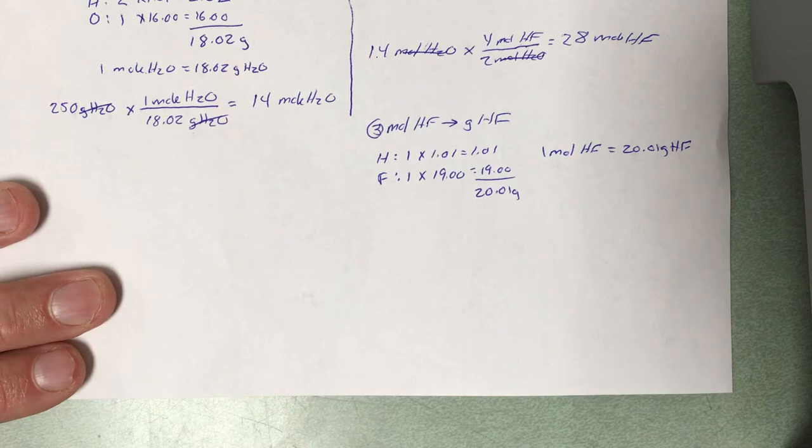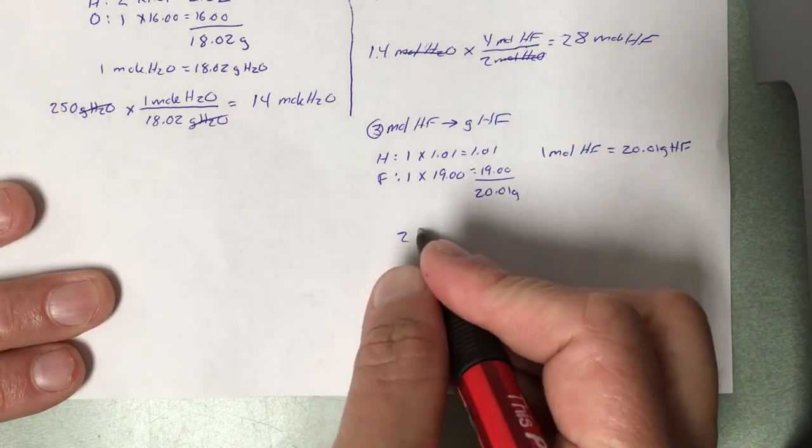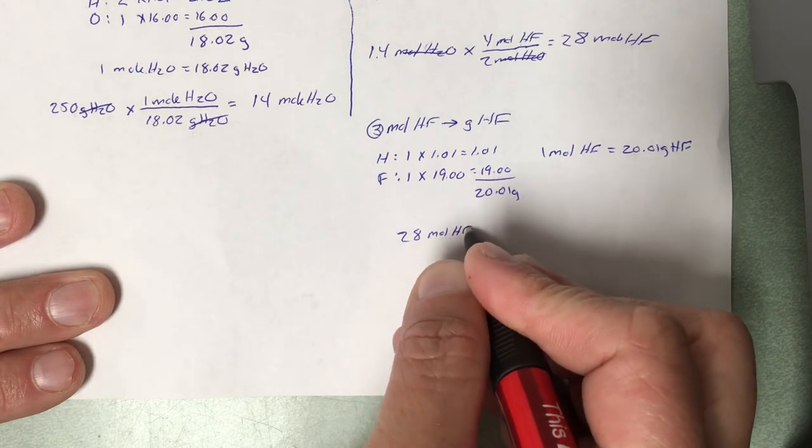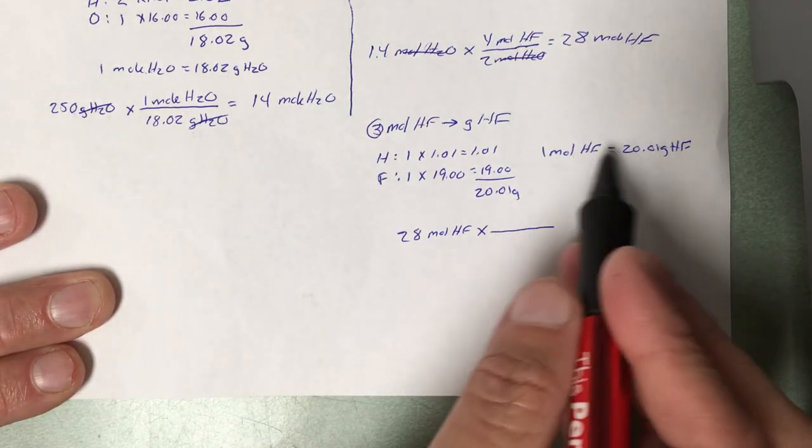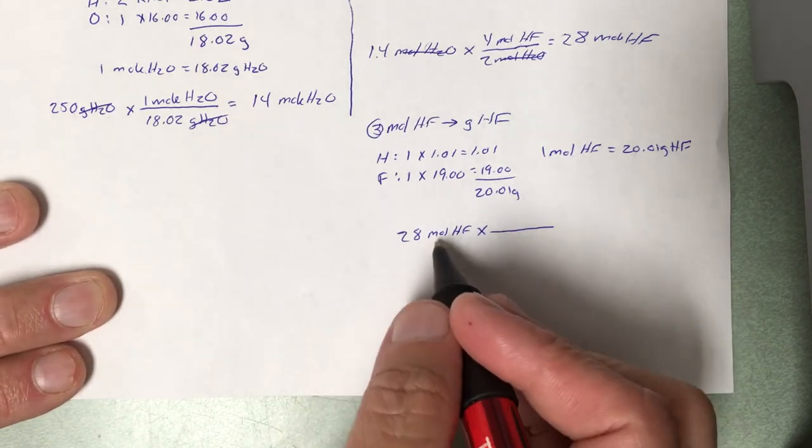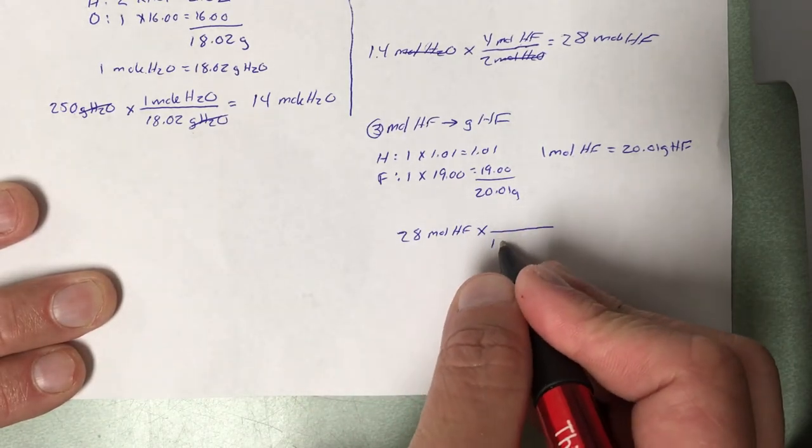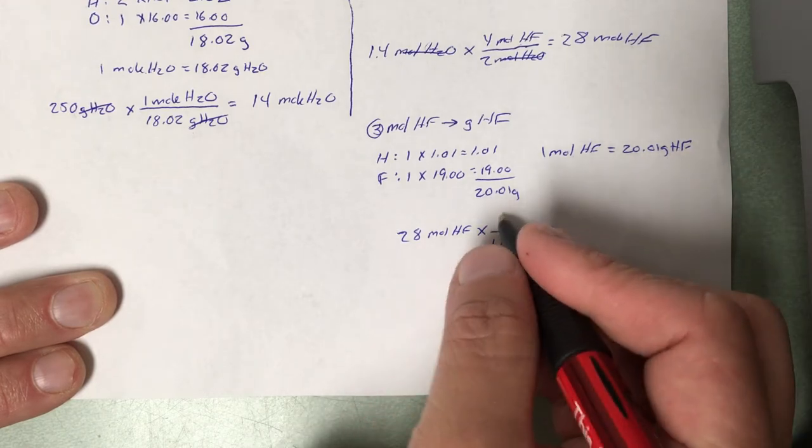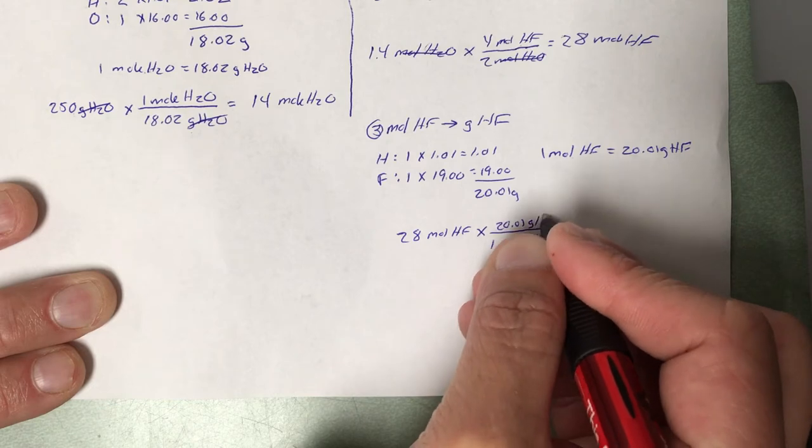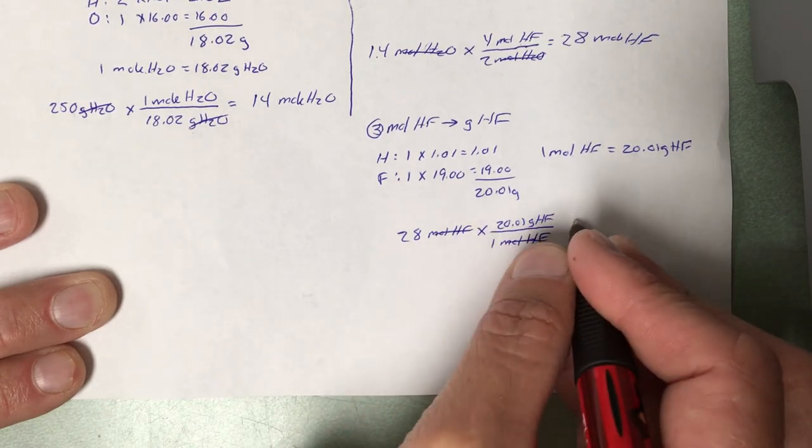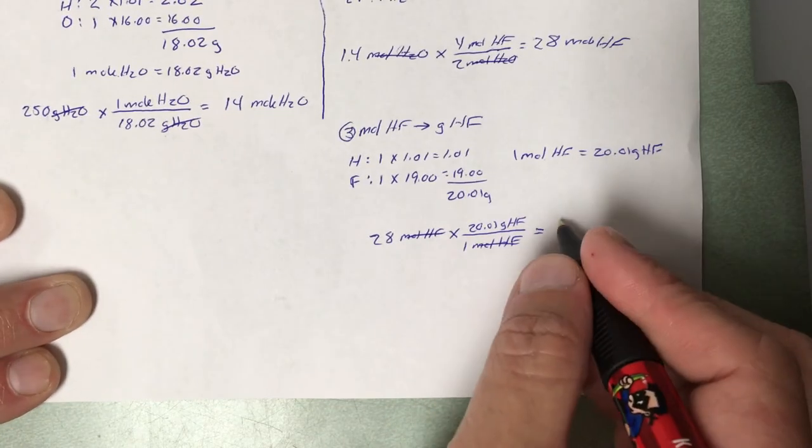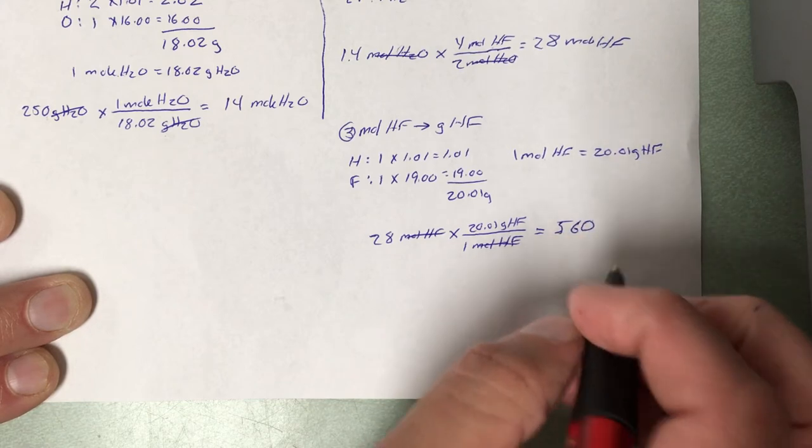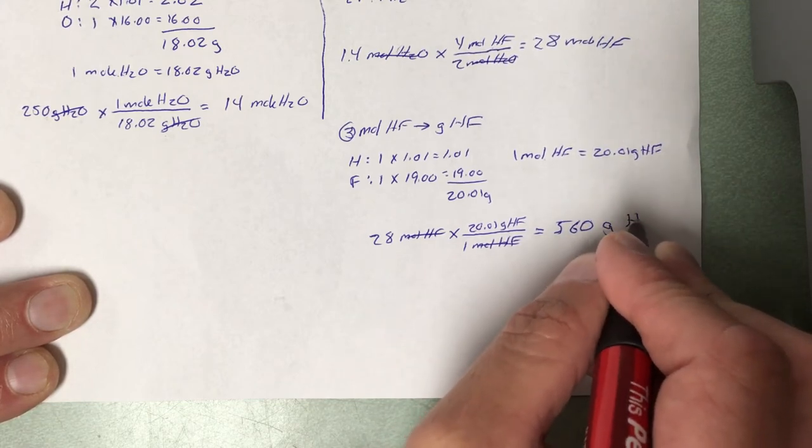Now we're ready to move on. Take the answer from the previous step: 28 moles of hydrogen fluoride, times the conversion factor. Remember, the numbers come from the equivalents we just made. I have moles of hydrogen fluoride, so I'll put the moles of hydrogen fluoride on the bottom. I'll take the grams and put it on top. Moles cancel. So 28 times 20.01, multiplying because the number that we're interested in is on the top. 560 grams of hydrogen fluoride.